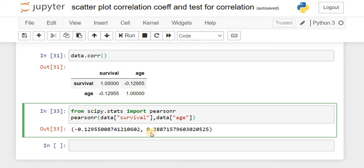In the output, you can see two values. The first is a negative correlation of -0.12955, which is the correlation coefficient. The second value, 0.2887, is the p-value.